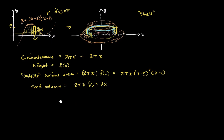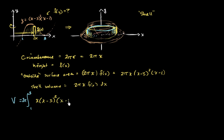Now we're ready to integrate over the interval. The volume of our entire shape is the definite integral from x equals 1 to x equals 3. We can take the 2π out front, and on the inside we have x times x minus 3 squared times x minus 1, dx. Using the shell method, we have set up our definite integral for the volume of this shape.